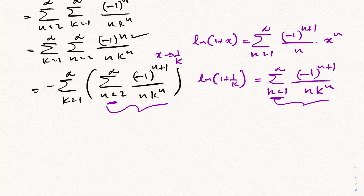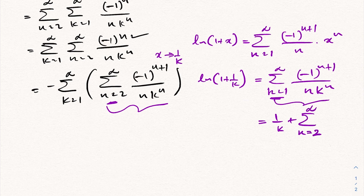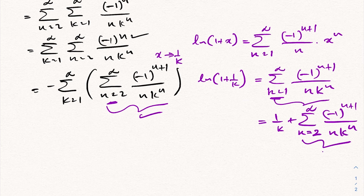Since the Taylor series starts at n equals 1, the first term gives minus 1 to the 2nd power which is 1, so 1 over k. Then the remaining series starts at n equals 2 to infinity of minus 1 to the n plus 1 over n times k to the n. This matches our inner sum, so we can write minus k equals 1 to infinity — isolating the part we need — giving us natural log of 1 plus 1 over k minus 1 over k.